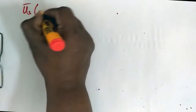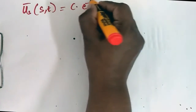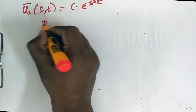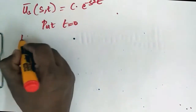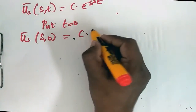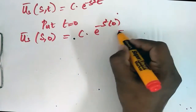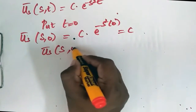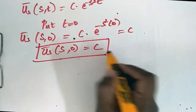Therefore, ū_s(s, t) = C · e^(−s² t). Putting t = 0: ū_s(s, 0) = C · e^0 = C. So ū_s(s, 0) = C.